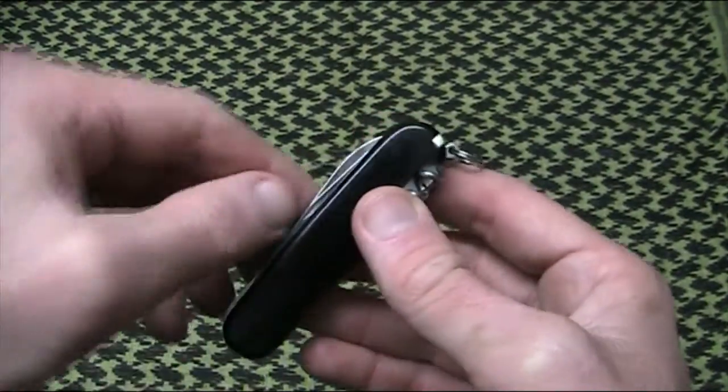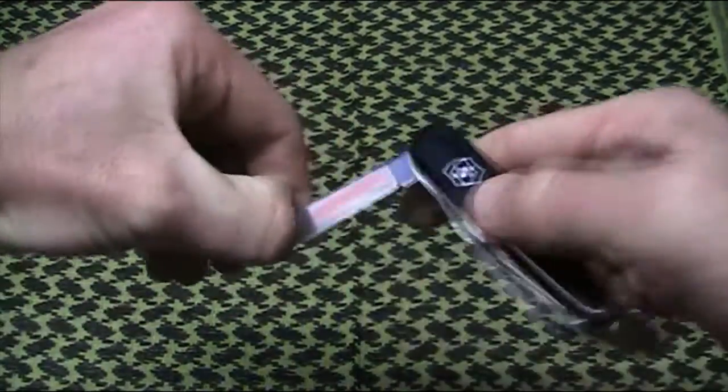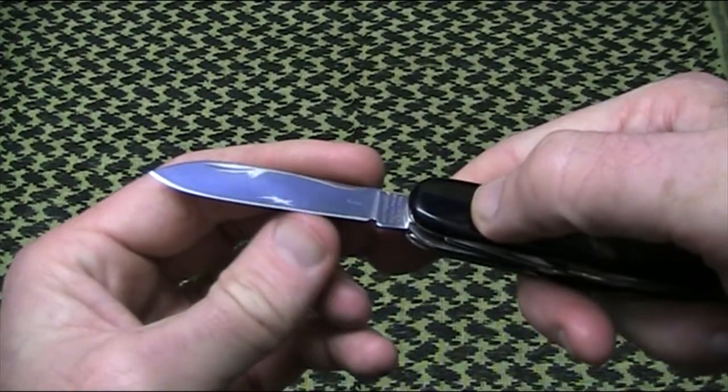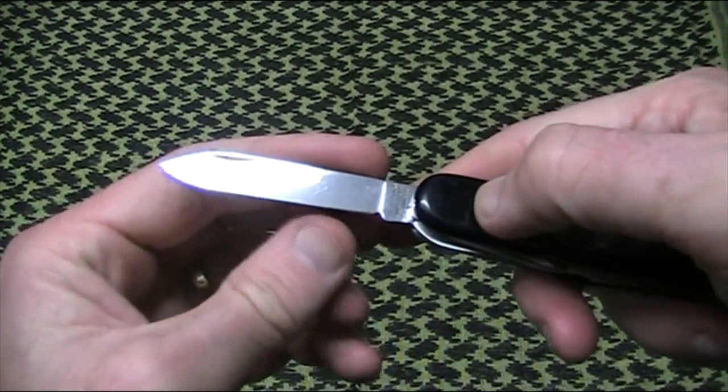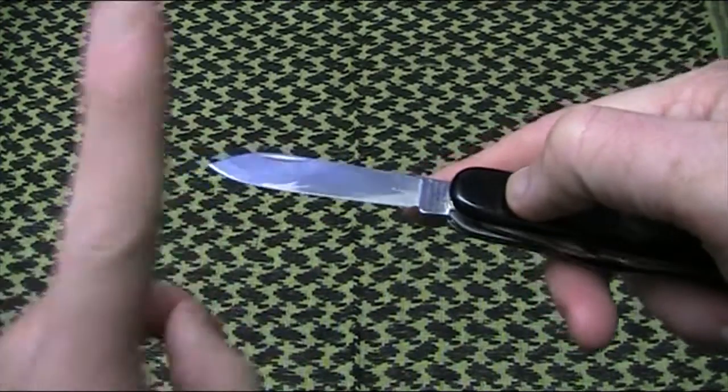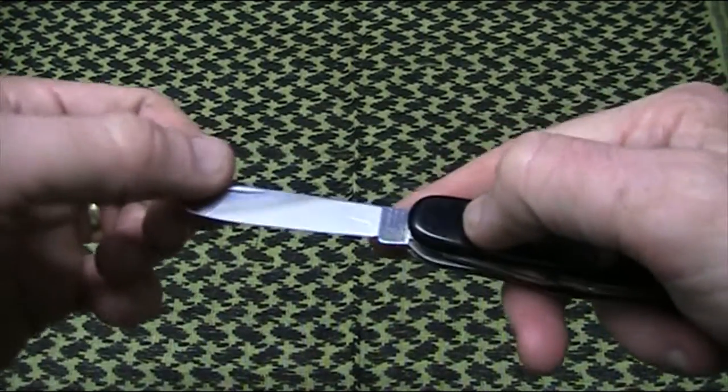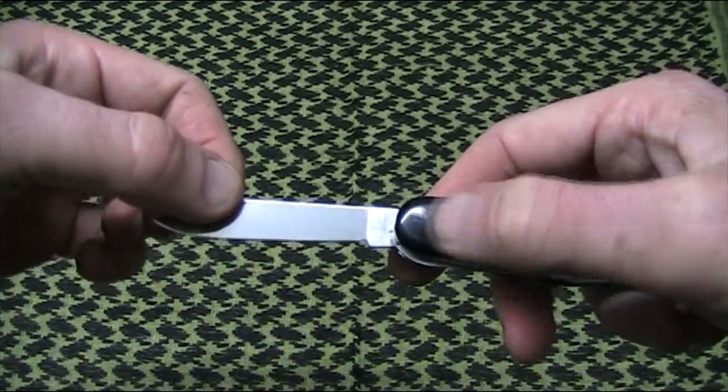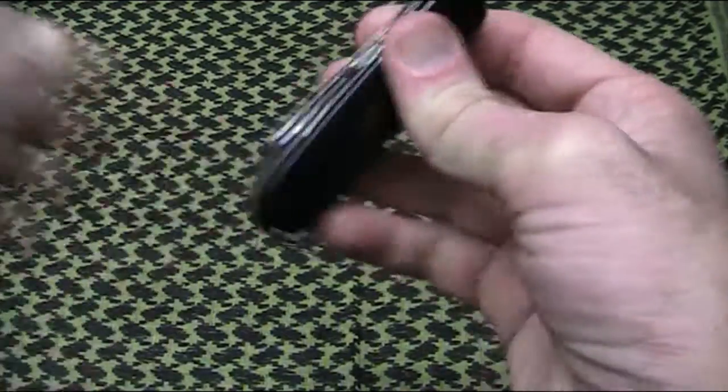I should mention, as I say there, these blades are a flat ground. On all the Victorinox blades, they're a 30 degree inclusive edge. So if you're using something like a Spyderco Sharpmaker or something like that on them, set it to your 15 degrees, and that'll match those factory sharpening settings. Alright, what else has it got?